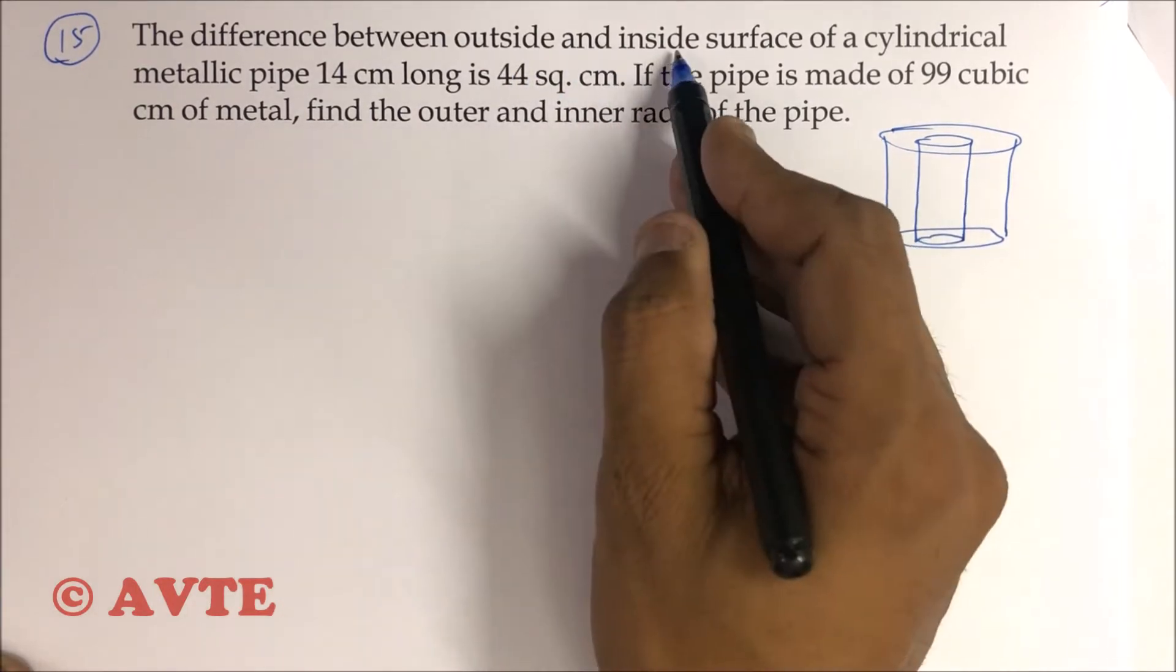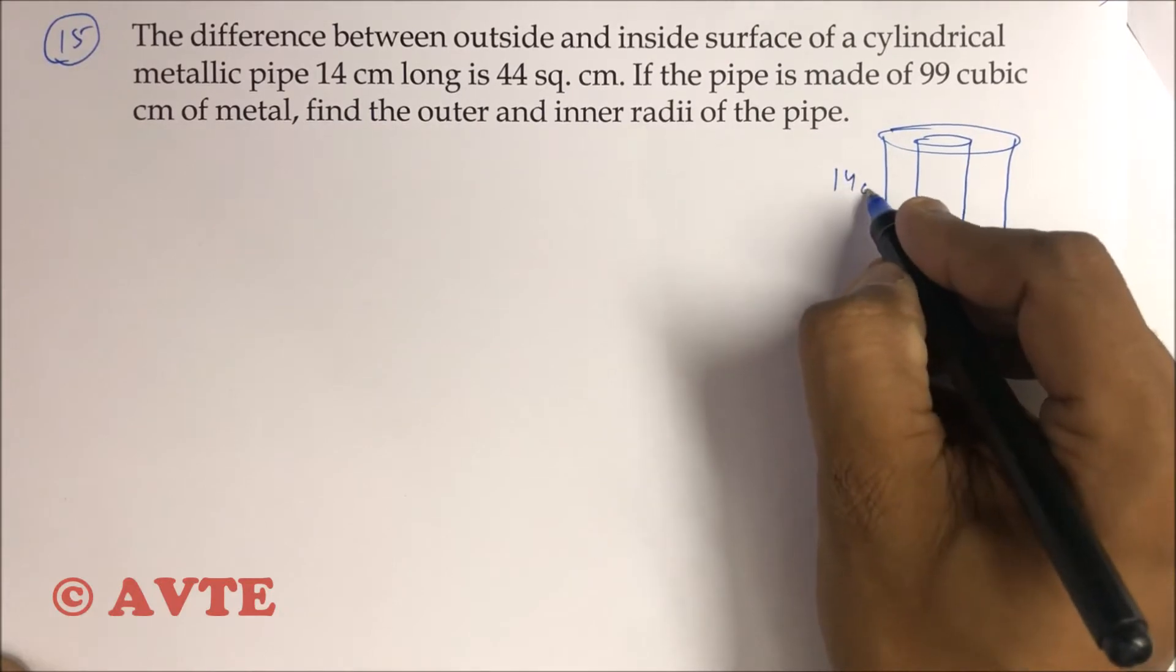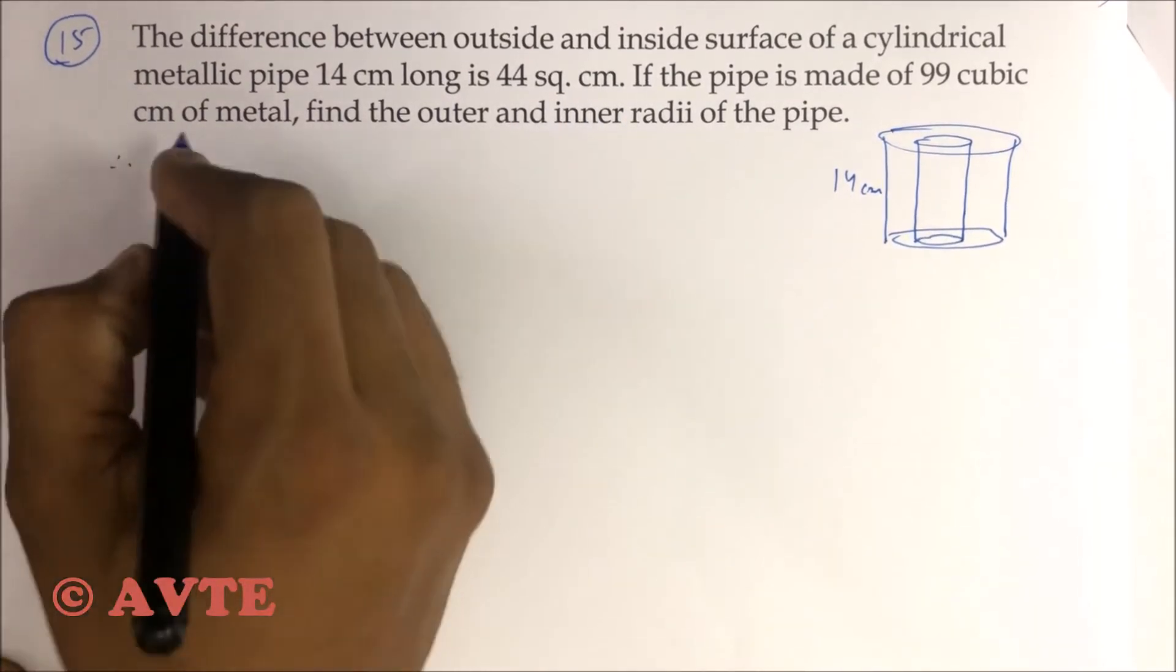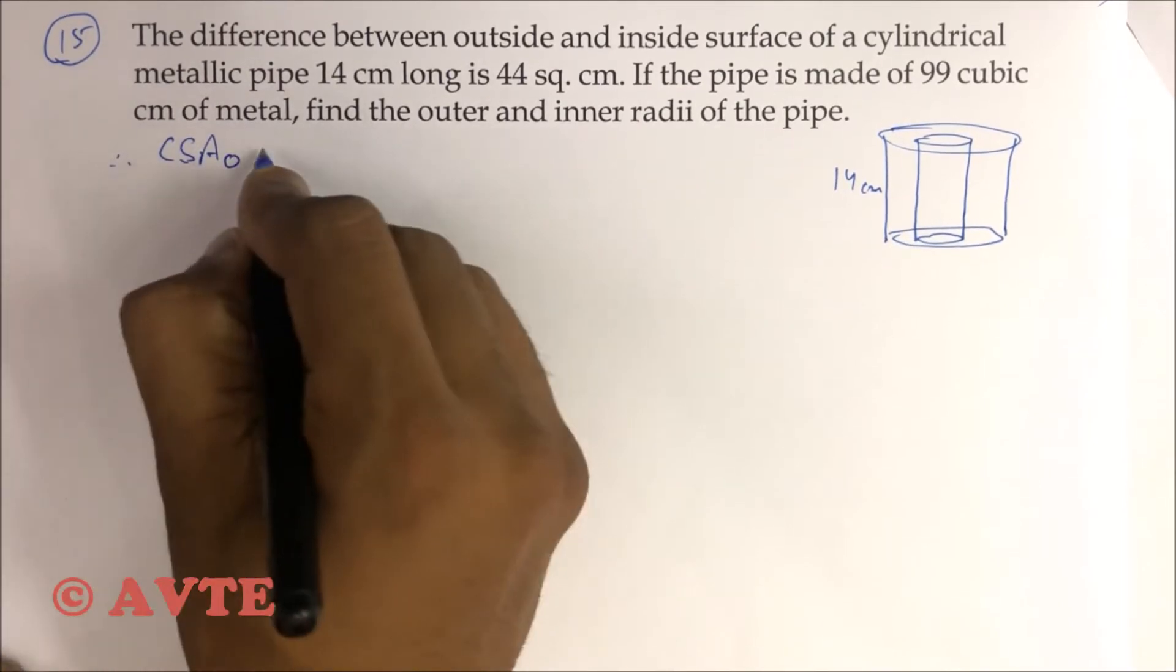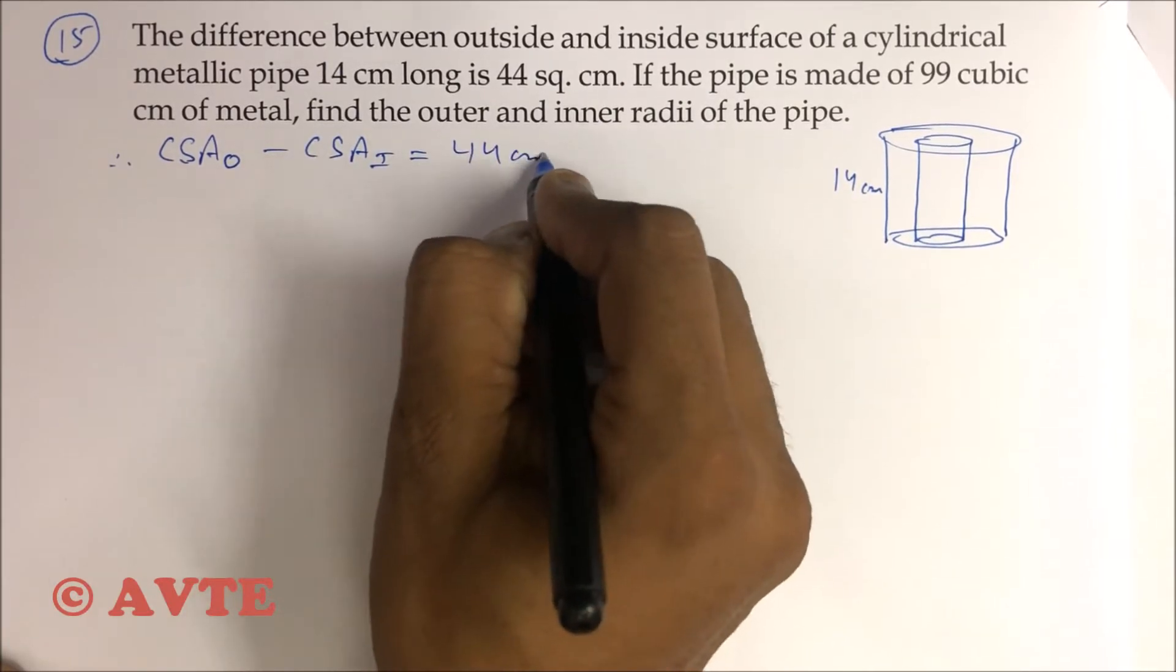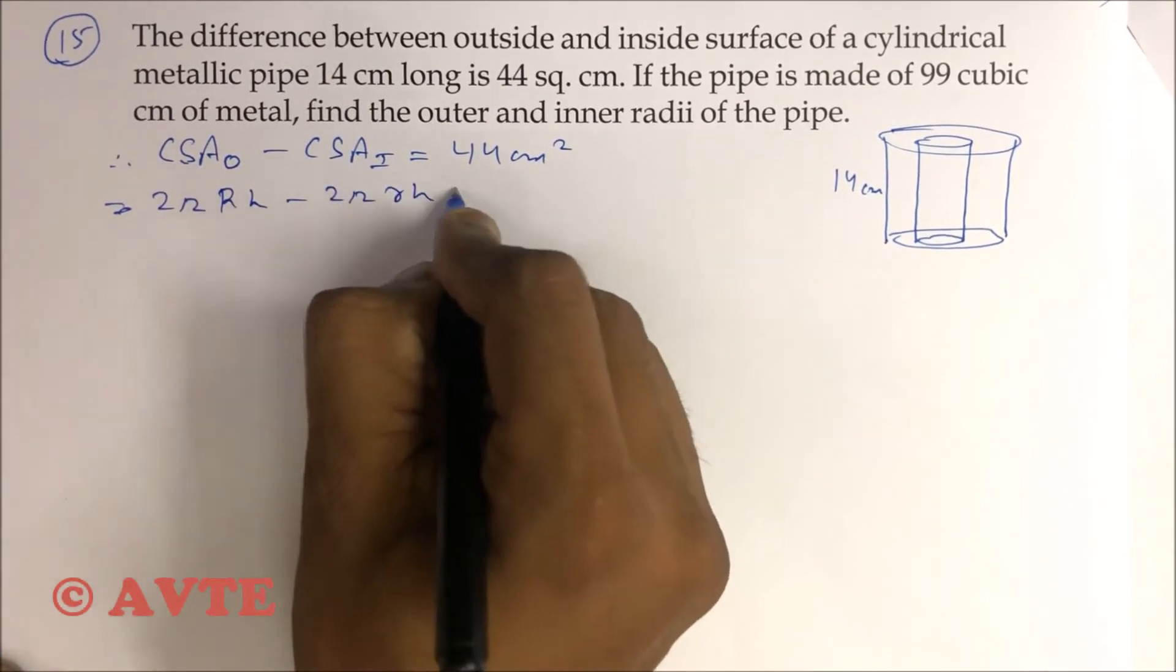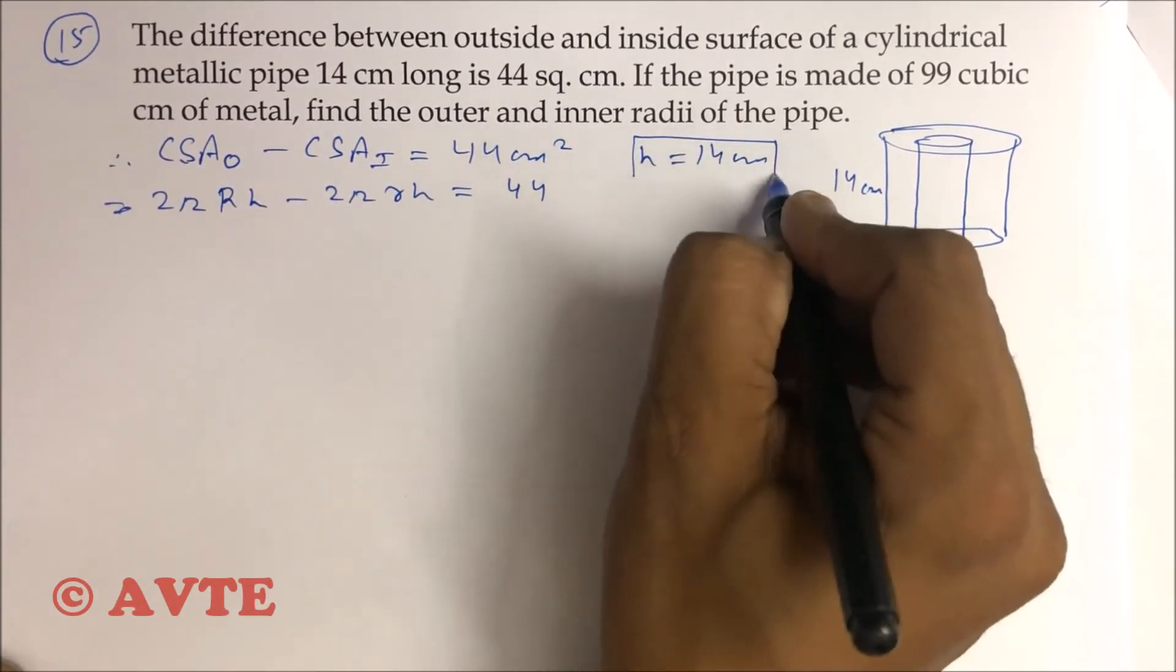You have outside and inside surface of a cylindrical pipe 14 centimeter long. The difference is 44 square centimeter, which means your CSA of outside minus CSA of inside is 44 cm square. That is 2πRh minus 2πrh equals 44, where your h is 14 centimeter.